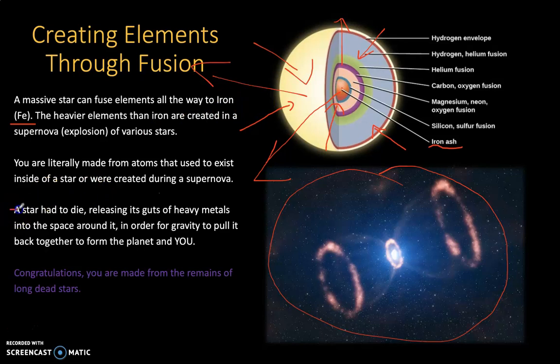A star had to die, releasing its guts of heavy metals into the space around them, in order for gravity to pull it back together to form the planets and you. So you are literally made from the remains of long dead stars. You are made out of the heavier elements beyond hydrogen and helium. And those heavier elements came from supermassive stars that exploded millions and millions of years ago. And then this gas coalesces, forming solar systems like our solar system, like our sun and the planets that orbit our sun.